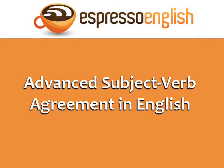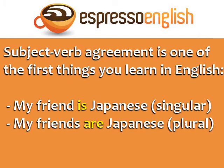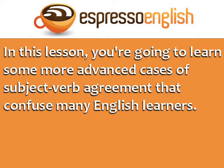Advanced Subject Verb Agreement in English from EspressoEnglish.net. Subject-verb agreement is one of the first things you learn in English. For example, 'my friend is Japanese' — we use 'is' because 'friend' is singular. 'My friends are Japanese' — we use 'are' because 'friends' is plural. In this lesson, you're going to learn some more advanced cases of subject-verb agreement that confuse many English learners.